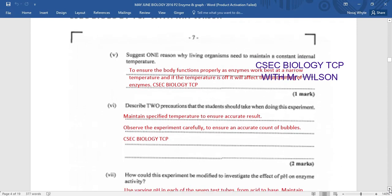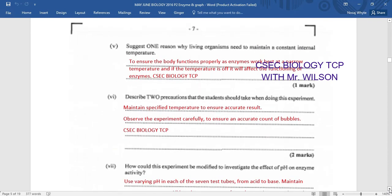And we move on down to part V. Give just one reason why living organisms need to maintain a constant internal temperature. Now, you would have seen that as the temperature elevated above 40, there was a sharp decline in activities. So to ensure that the body functions properly, as enzymes were best at a normal temperature, and if the temperature is off, it will of course affect the functioning of the enzyme. So if we want to ensure that all the reactions in the body are taken care of in a timely manner and properly, it is very important that a constant internal environment is of course maintained.